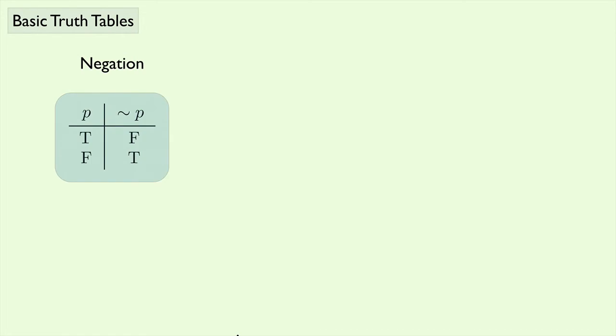Now let's look at negation. This one's pretty simple. If you have P and then we have not P, we know that it just switches the truth value. True becomes false and false becomes true.